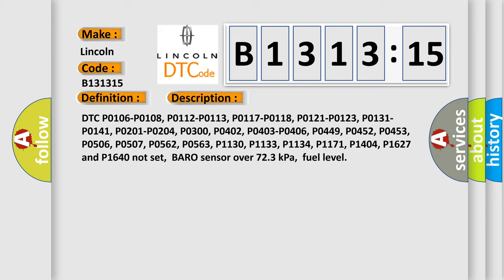DTC codes P0106, P0108, P0112, P0113, P0117, P0118, P0121, P0123, P0131, P0141, P0201, P0204, P0300, P0402, P0403, P0406, P0449, P0452, P0453, P0506, P0507, P0562, P0563, P1130, P1133, P1134, P1171, P1404, P1627, and P1640 not set; BARO sensor over 72.3 kilopascals, fuel level.